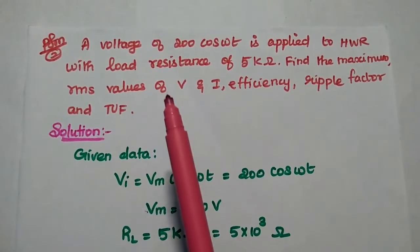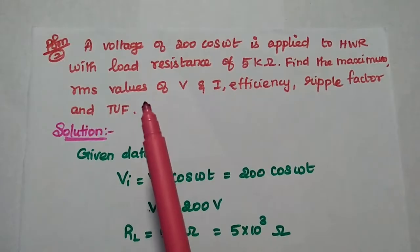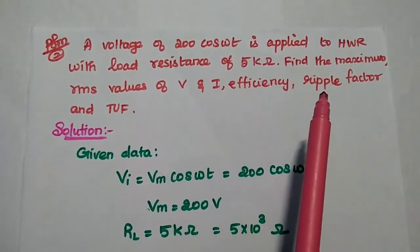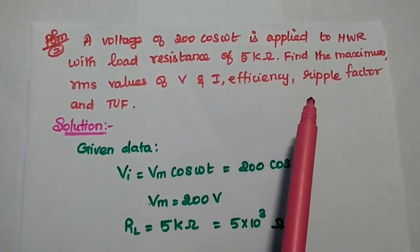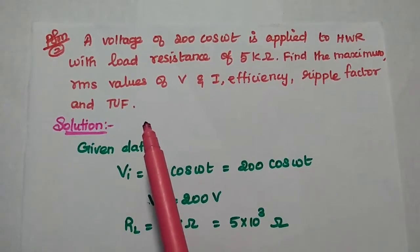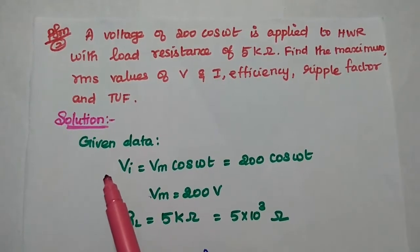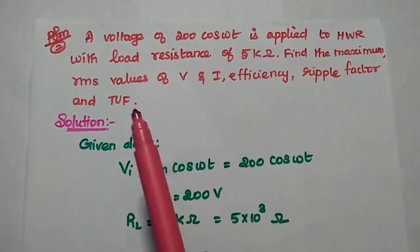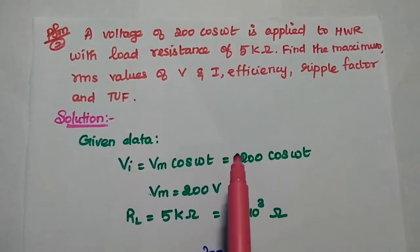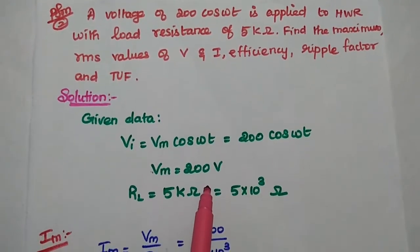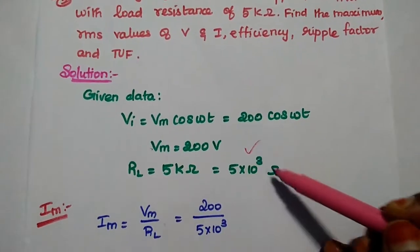The second problem: a voltage of 200 cos(ωt) is applied to a half wave rectifier with a load resistance of 5 kΩ. Find the maximum and RMS values of voltage and current, efficiency, ripple factor, and transformer utilization factor (TUF). From the input signal, Vm = 200 V and RL = 5 kΩ.